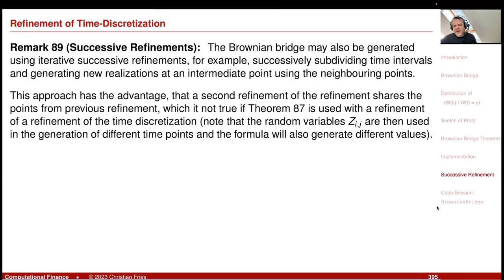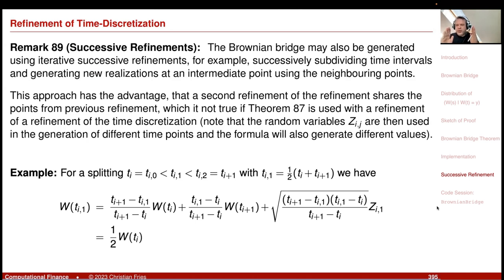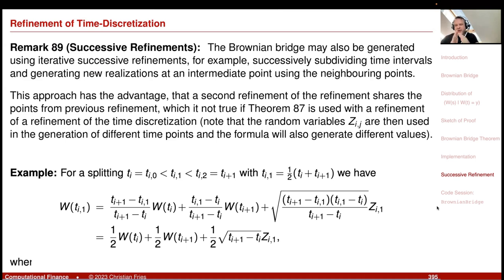You can rewrite this formula more simply to see it really is like an interpolation: (1 minus alpha) times the starting value plus alpha times the end value, plus the square root of (1 minus alpha) times another Brownian increment. Sometimes you create this by successive refinements — for example, using the formula to sample a point in the middle, giving 0.5 times the start plus 0.5 times the end plus 0.5 times a normal random variable with the square root of the interval length, then repeating for sub-intervals.